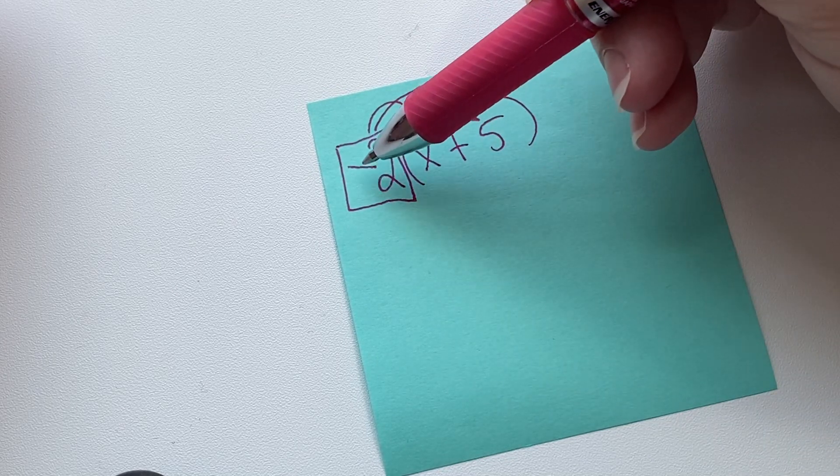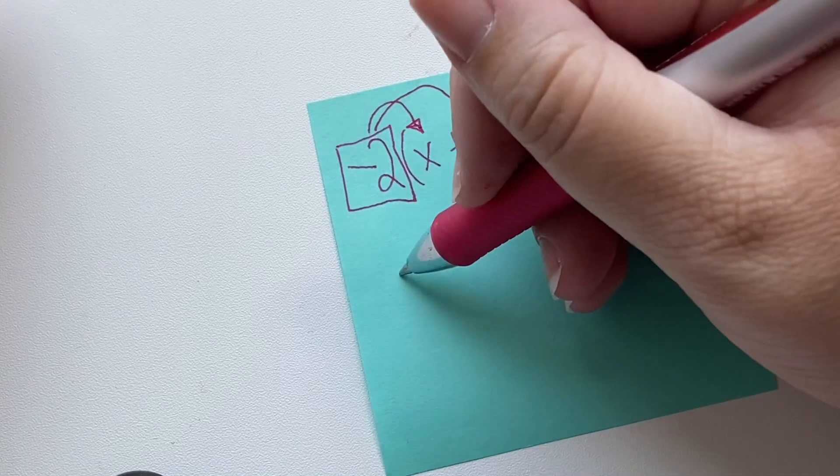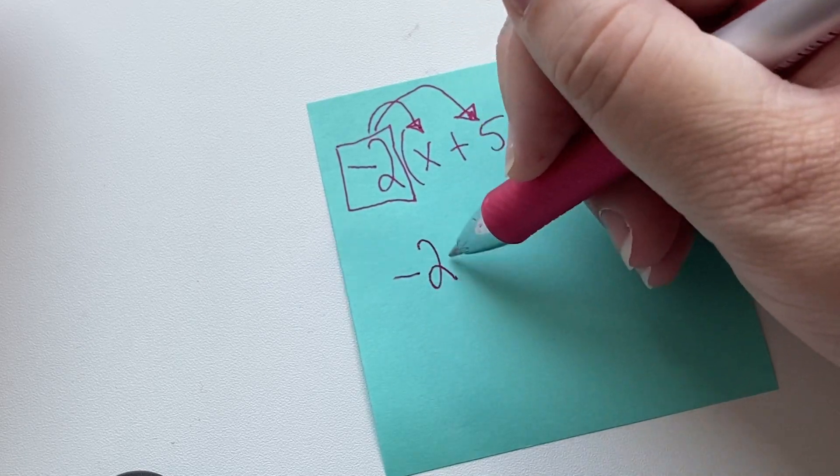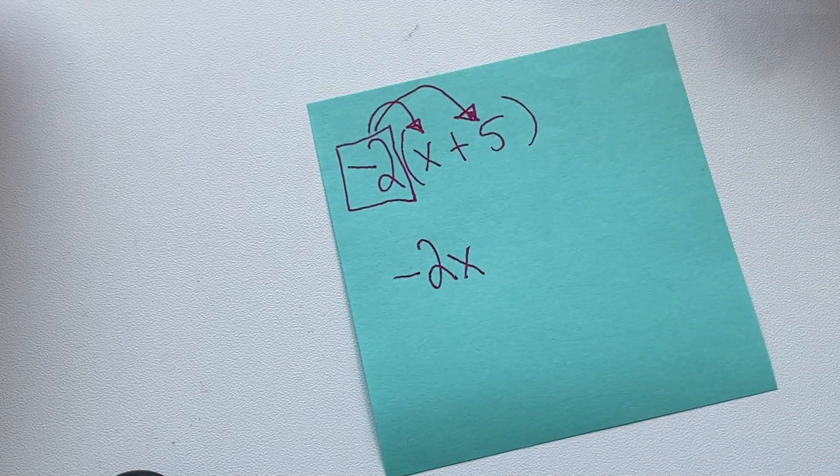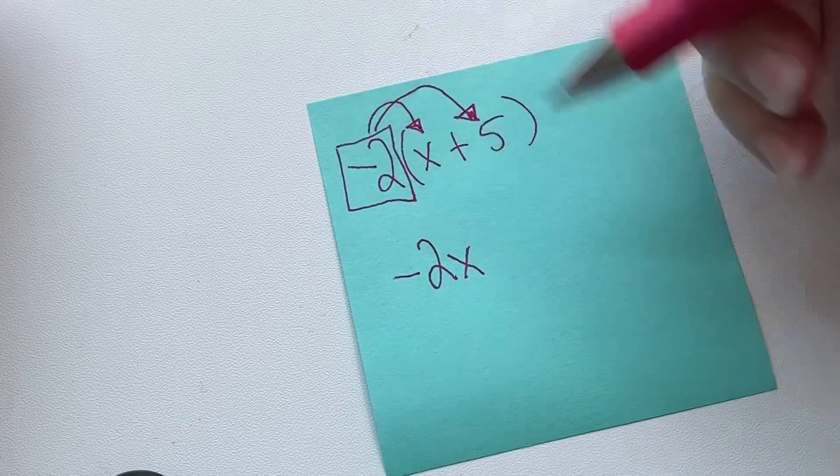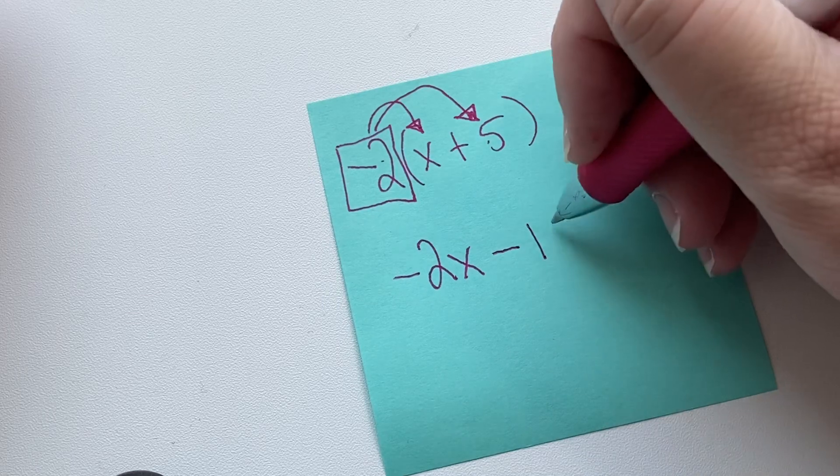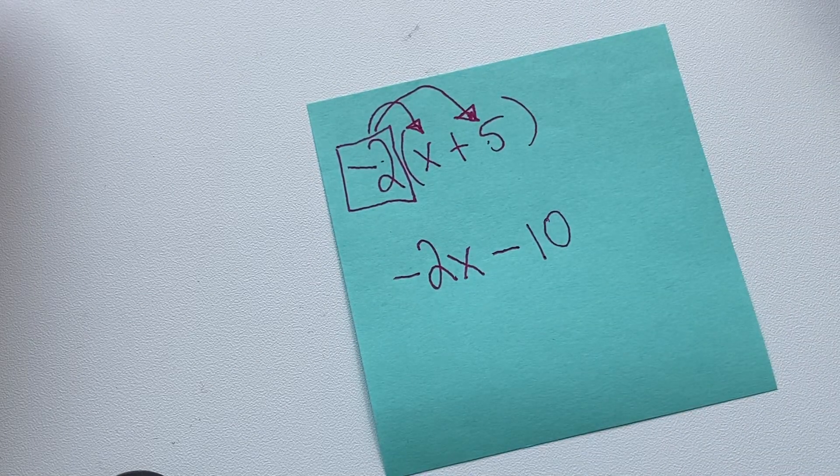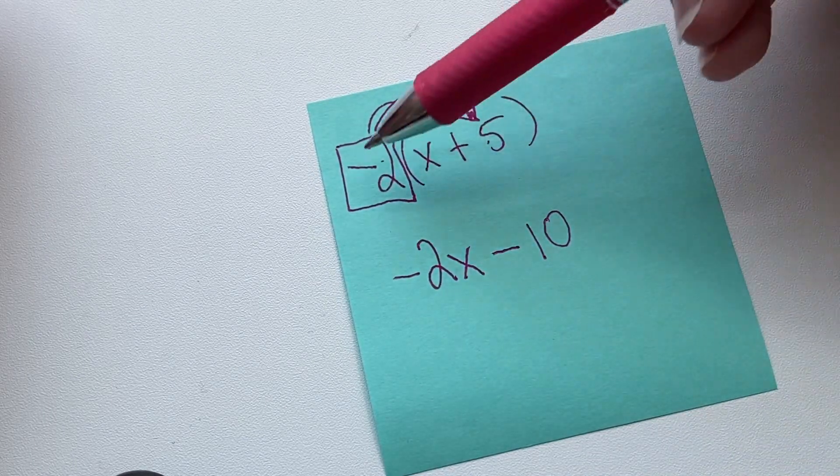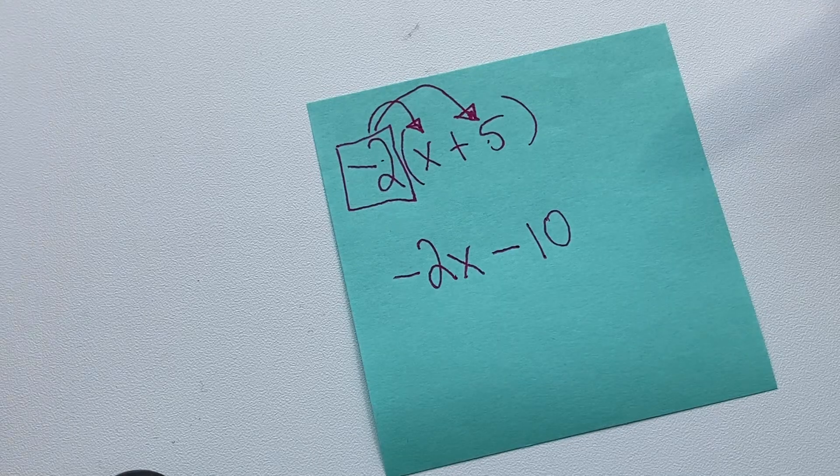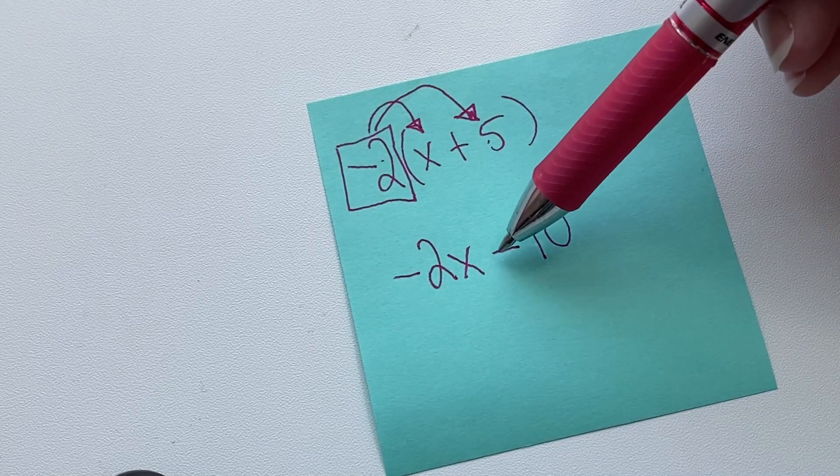This is going to be our negative times a positive, which equals a negative. So we're going to have negative 2x. And this is a negative times a positive, so our answer will be negative. And two times five is 10. So we have five negative twos, which is the easier way of looking at it for me, which would be negative 10.